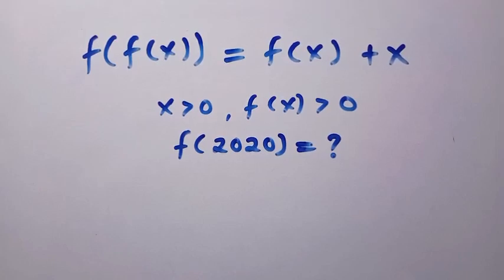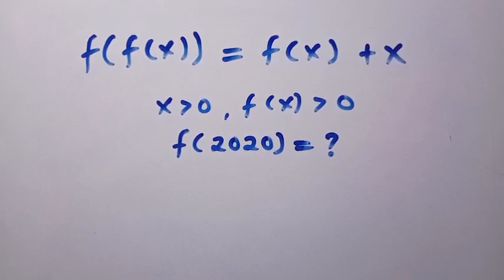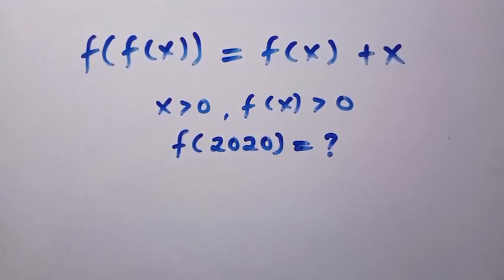Good day viewers, welcome. We have an interesting functional equation in composite form: f(f(x)) = f(x) + x, where x is greater than zero and f(x) is also greater than zero. What is f(2020)? I'm going to solve this in the easiest way.